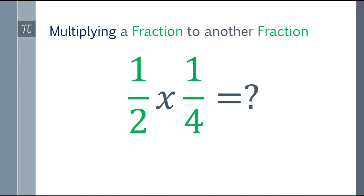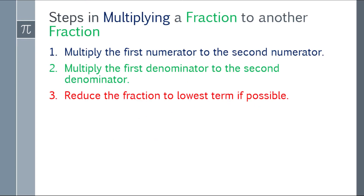So what are the steps to multiply a fraction by another fraction? First, multiply the first numerator by the second numerator. Second, multiply the first denominator by the second denominator. And the last step: reduce the fraction to lowest terms if possible.